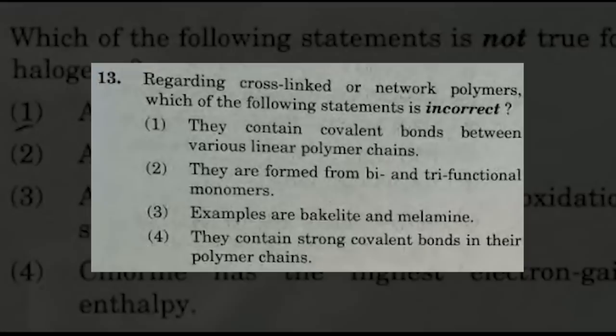The next question is regarding cross-link or network polymers: which of the following statements is incorrect? The suggested answers are options 1, 2, and 4 — that is, option 1: they contain covalent bonds between various linear polymer chains; option 2: they are formed from bi- or tri-functional monomers; and option 4: they contain strong covalent bonds in their polymer chain.